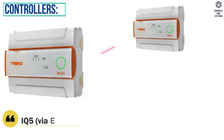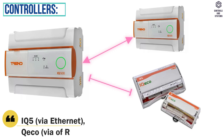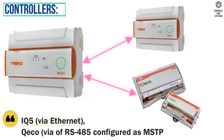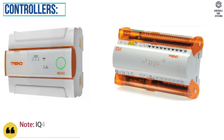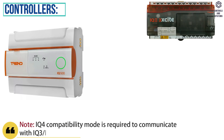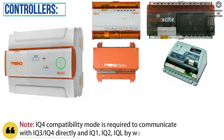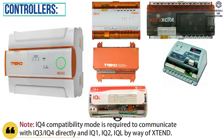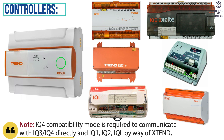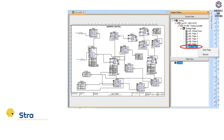Controllers: IQ5 via Ethernet, IQ Eco via AVRS 485 configured as MSTP. Note: IQ4 compatibility mode is required to communicate with IQ3 and IQ4 directly, and IQ1, IQ2, IQ-L by way of XTEND.